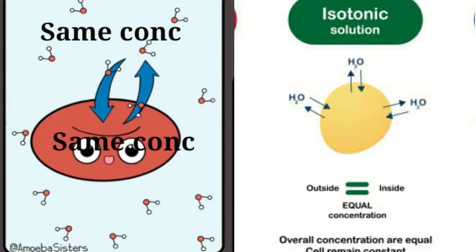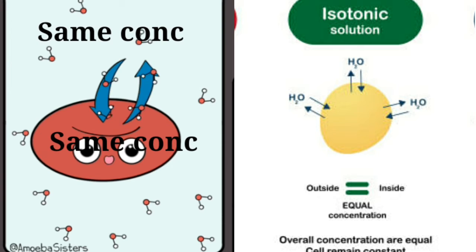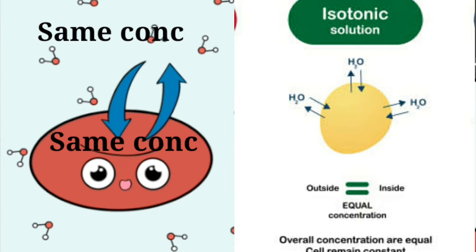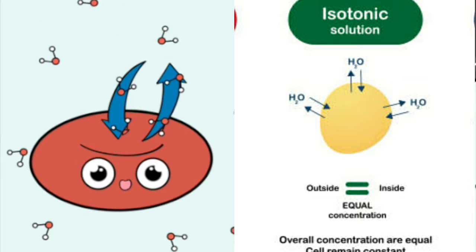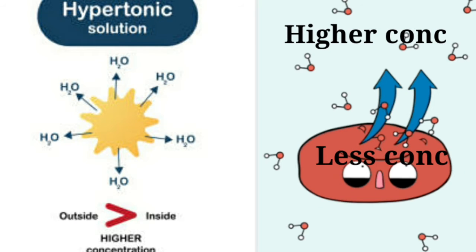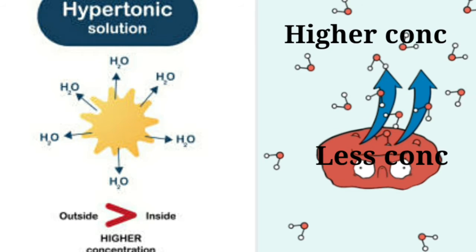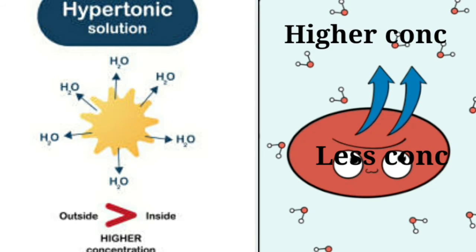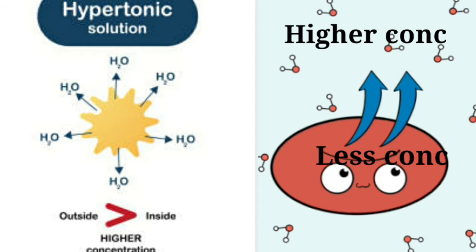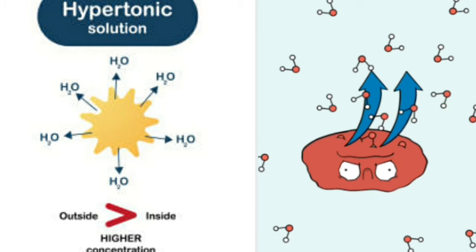If the medium has exactly the same water concentration as the cell, there will be no net movement of water across the cell membrane. Such a solution is known as an isotonic solution. If the medium has a lower water concentration, then the cell will lose water by osmosis. Such a solution is known as a hypertonic solution.